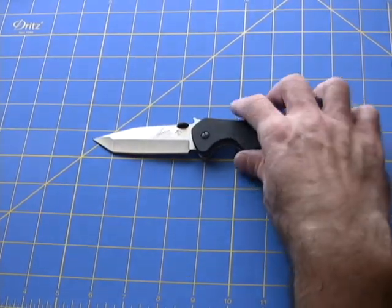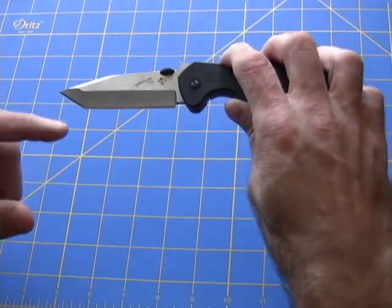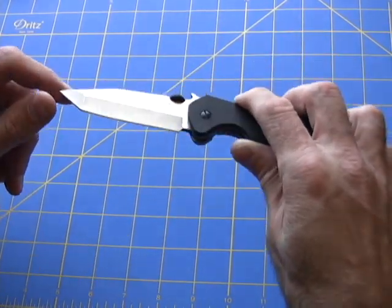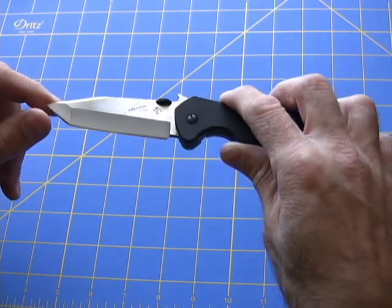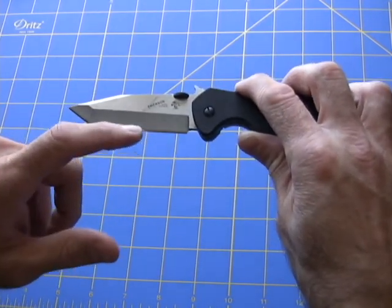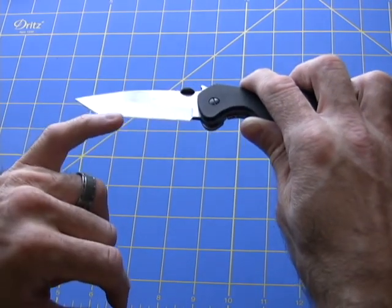The blade has two finishes. The upper portion is a satin finish while the lower here is a stonewashed finish on the grind.